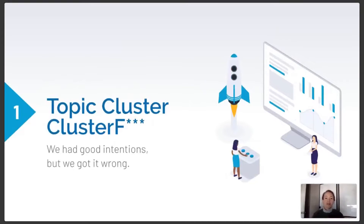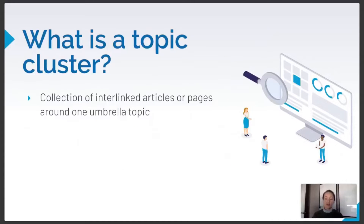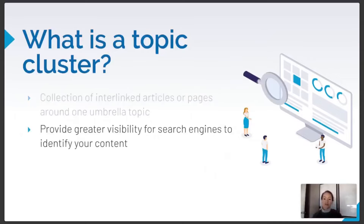I was tweaking this content matrix after Search Engine Journal asked me to write an article about topic clusters. Topic clusters can be great for SEO. They're essentially a group of articles all linked together under one umbrella pillar page. Because we're providing lots of internal links, it helps search engines figure out what your site is about and your area of expertise. It can also spread link equity from top pages to newer or deeper pages.